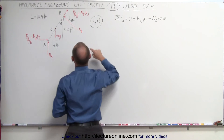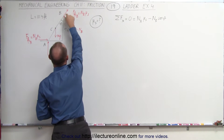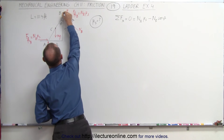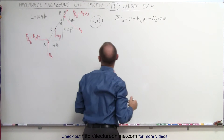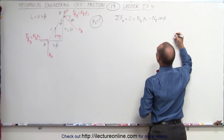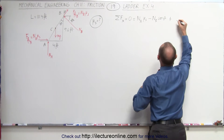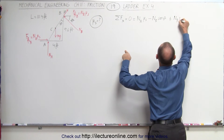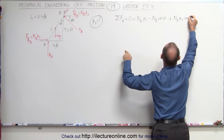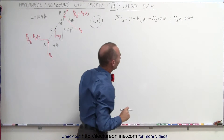We also need the horizontal component of the friction force. For that angle theta, we look for the opposite side, which gives us plus — because it's pointing to the right — the friction force, which is N sub B times mu sub S times the sine of theta. All this adds up to zero.